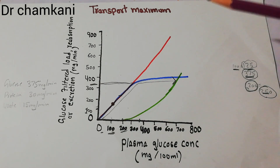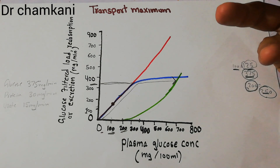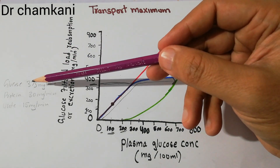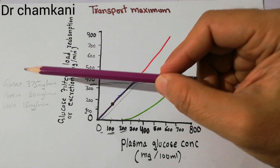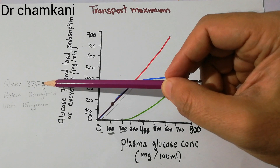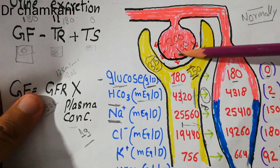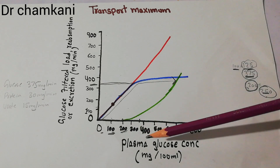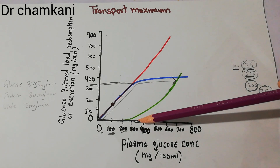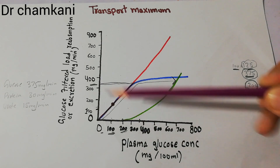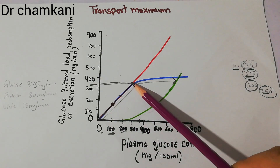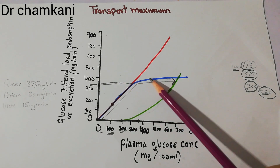Glucose starts appearing in urine at the threshold because not all nephrons in the kidneys have the same transport maximum. Some nephrons will start excreting glucose even before the 375 limit, and some will be absorbing even beyond this limit. But almost 99% of the nephrons will not absorb glucose if the filtered load is more than 375 mg per minute. This filtered load of 375 mg per minute is achieved when the plasma glucose concentration is somewhere between 200 and 300. So till the point of 375 mg per minute, all the glucose that is filtered is reabsorbed, but beyond this point glucose starts appearing in the urine.